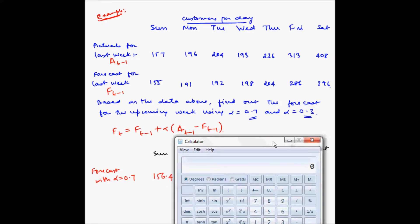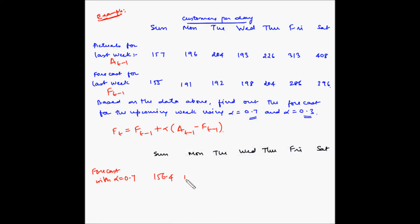Now let us move to Monday. Again, A(t-1) minus F(t-1): 196 minus 191, multiplied by 0.7, plus F(t-1) of 191, gives 194.5. Similarly, let me calculate for the remaining days with alpha equal to 0.7. These are the values for the forecast using alpha equals 0.7.